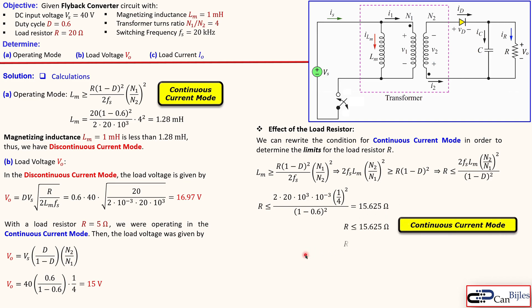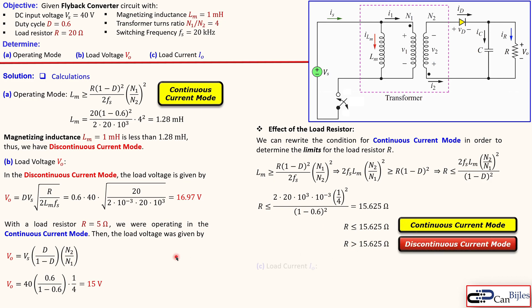For the final question, the load current is straightforward using Ohm's law. Since we know the output voltage Vo ≈ 16.97 V and the resistor R = 20 Ω, the output current Io = Vo/R ≈ 848.5 mA.